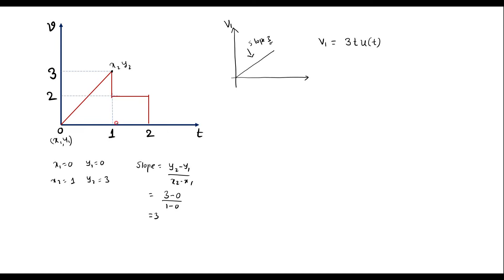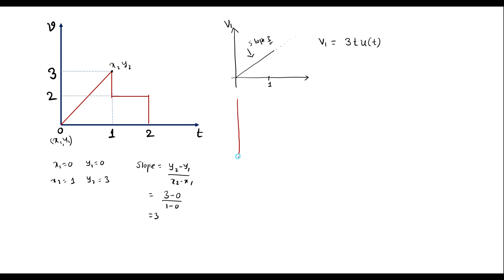At t equal to 1, this ramp signal should be stopped. Since V1 continues till infinity, to stop this signal at t equal to 1, we should add one more negative ramp signal at t equal to 1. Let that be my second signal, V2. This is a negative ramp signal with slope minus 3. Since it is a delayed ramp signal shifted by 1 unit, V2 equals minus 3·(t minus 1)·U(t minus 1).